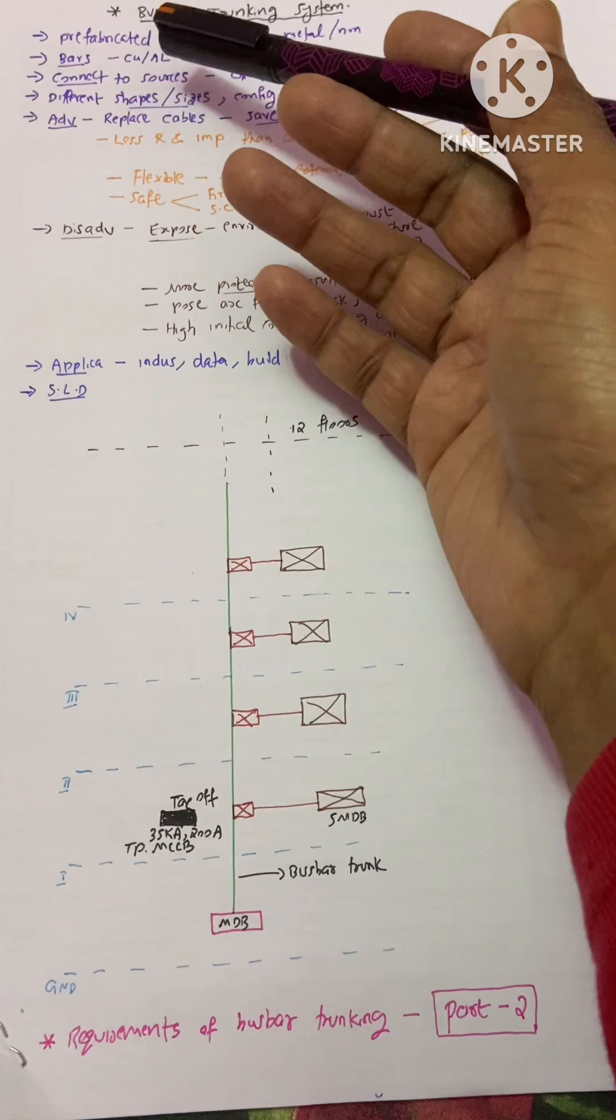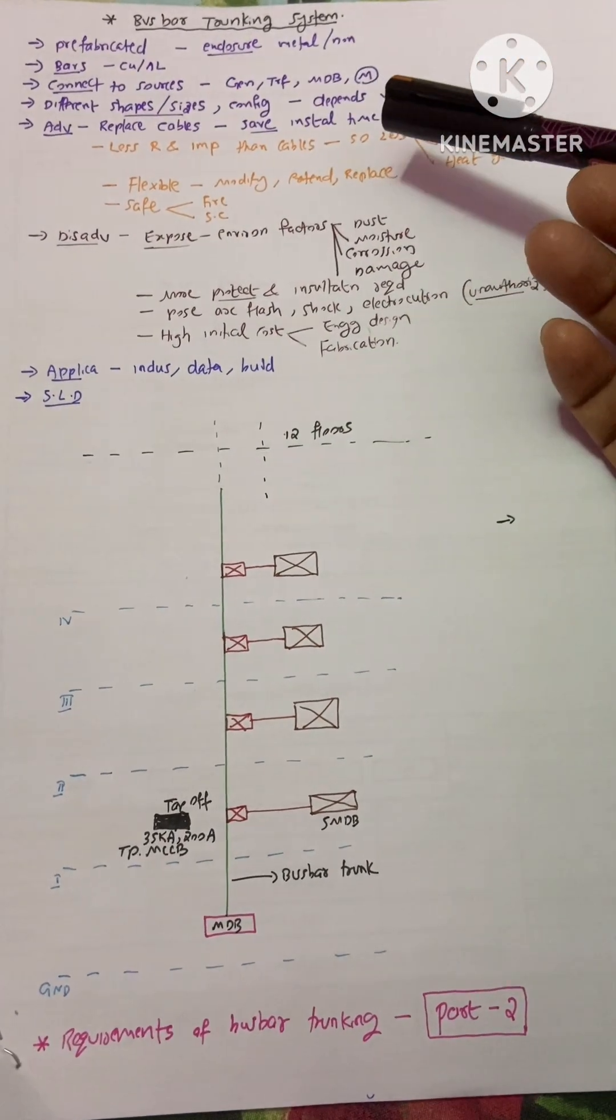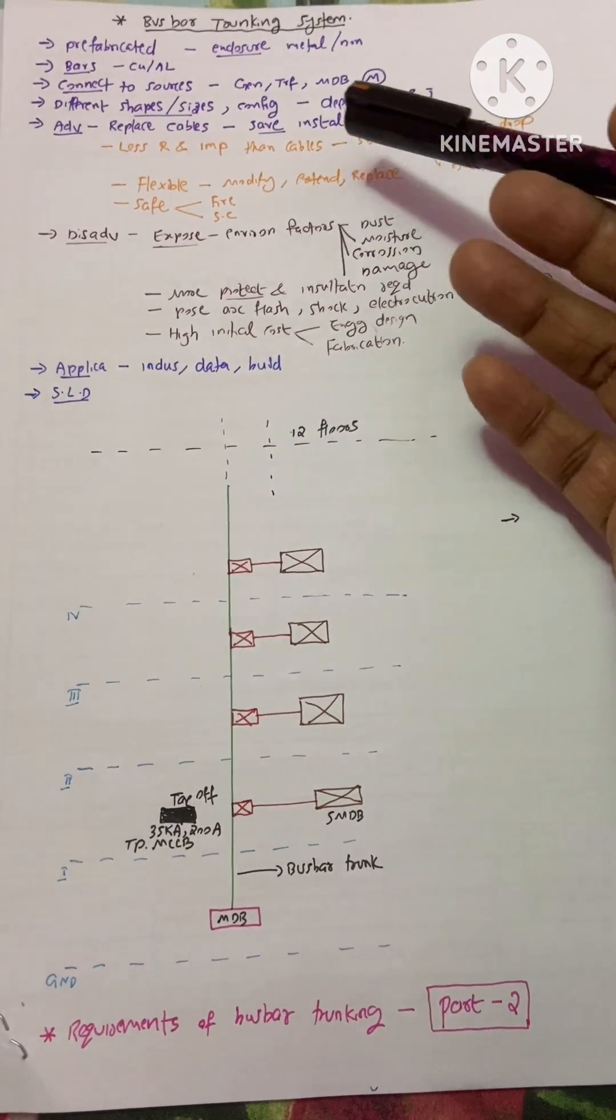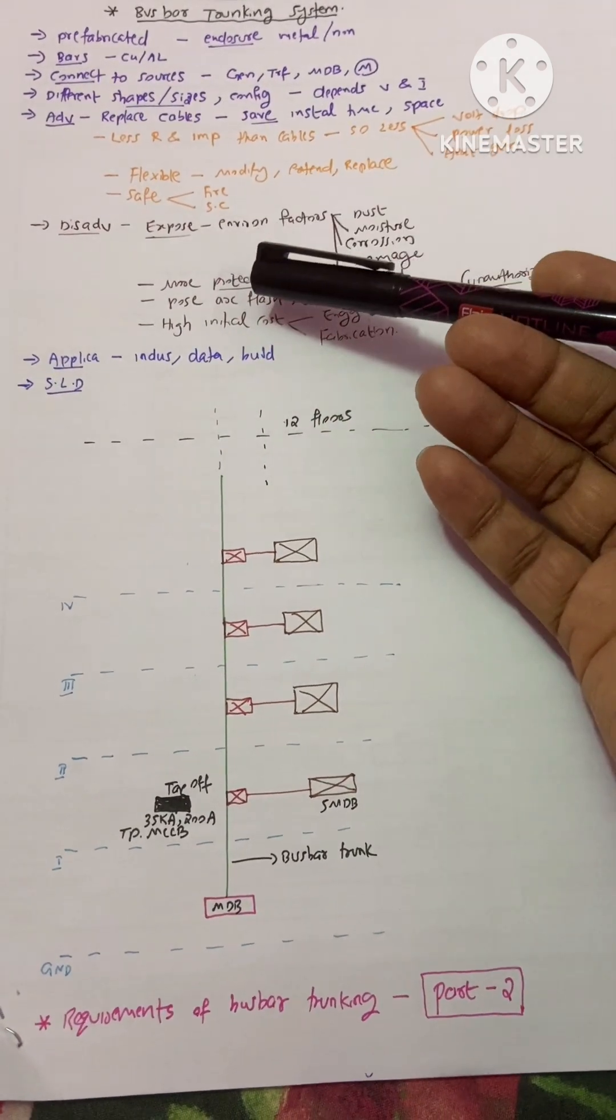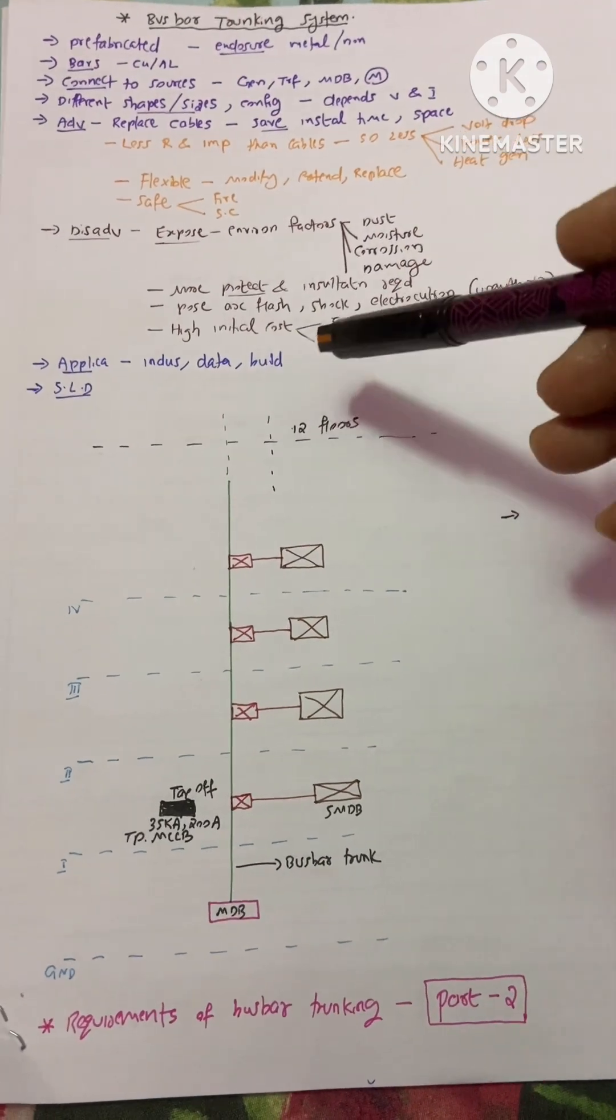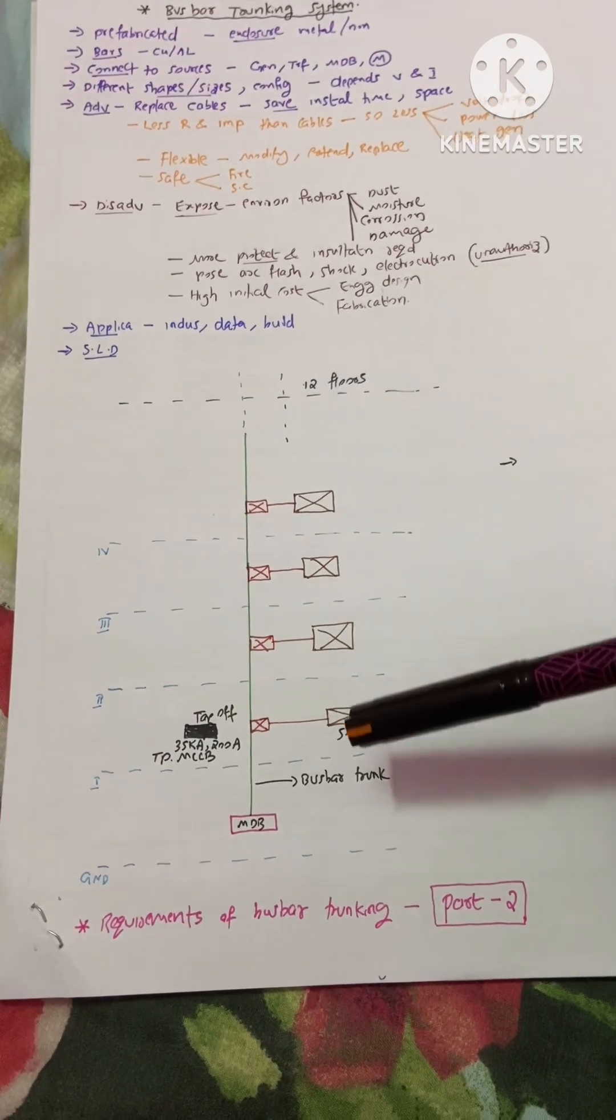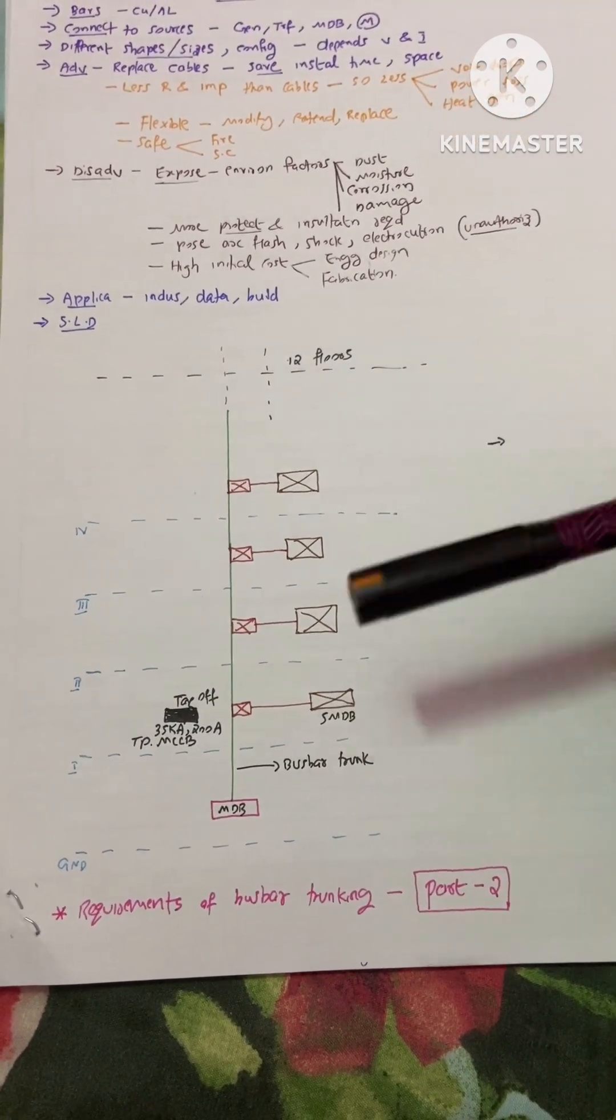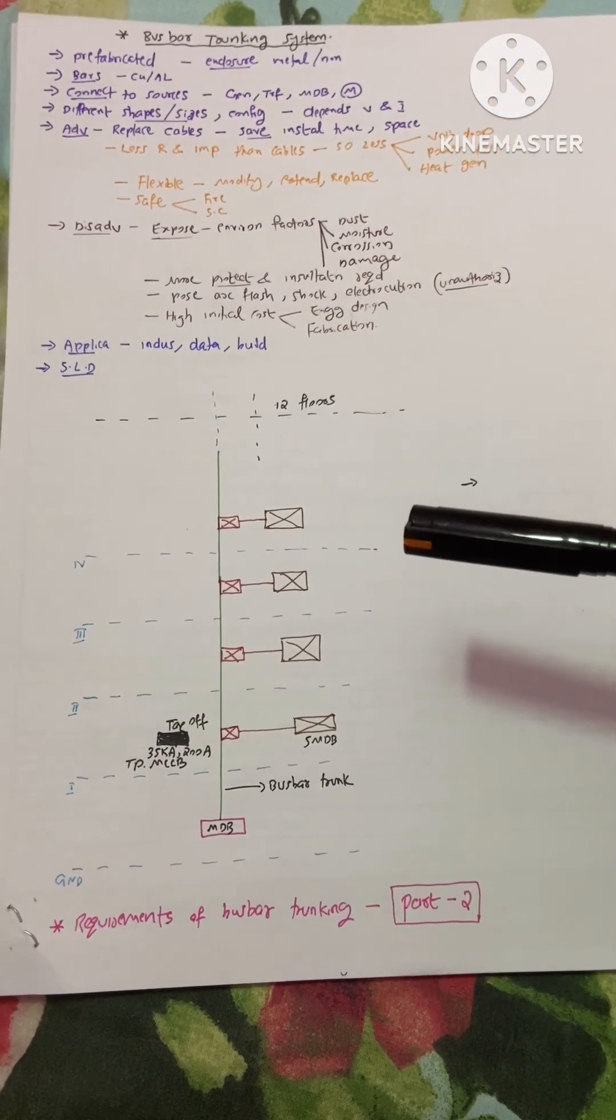The bars of this system are made up with and to which sources it would be connected. What are the shapes, size, and configurations? What are the many advantages and disadvantages of this system? Which are the fields in which we are using this trunking system? And about the single line diagram of this system, to how many floors we could install the single bus system, and many other things I explained in this video.